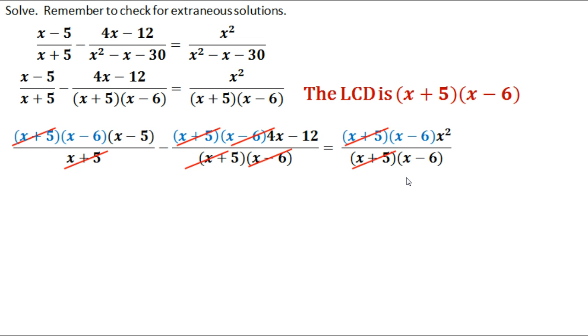On the far end here I have the same thing. I have an x plus 5 on top and bottom we can cross off, and an x minus 6 on top and bottom we can cross off. So now we need to determine what we have left.